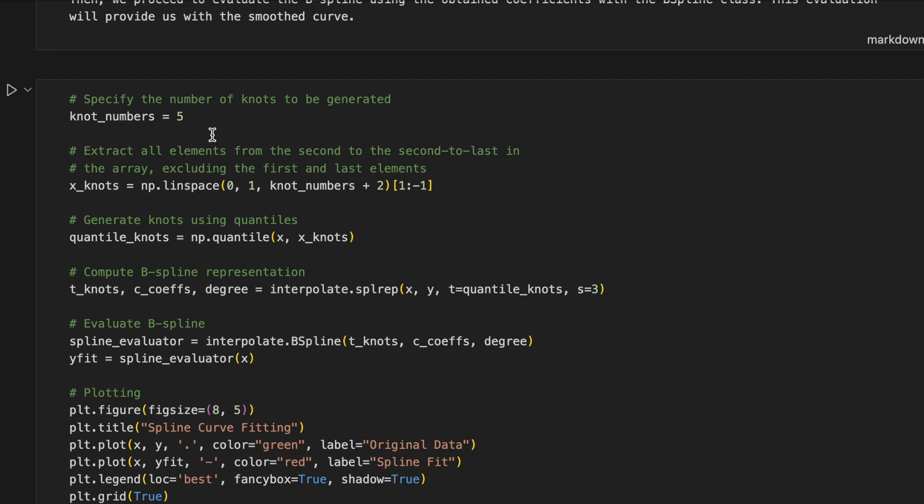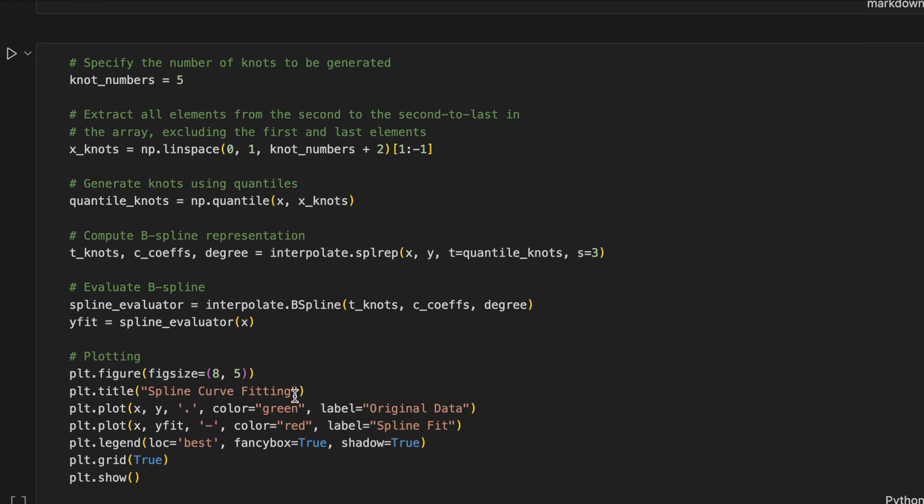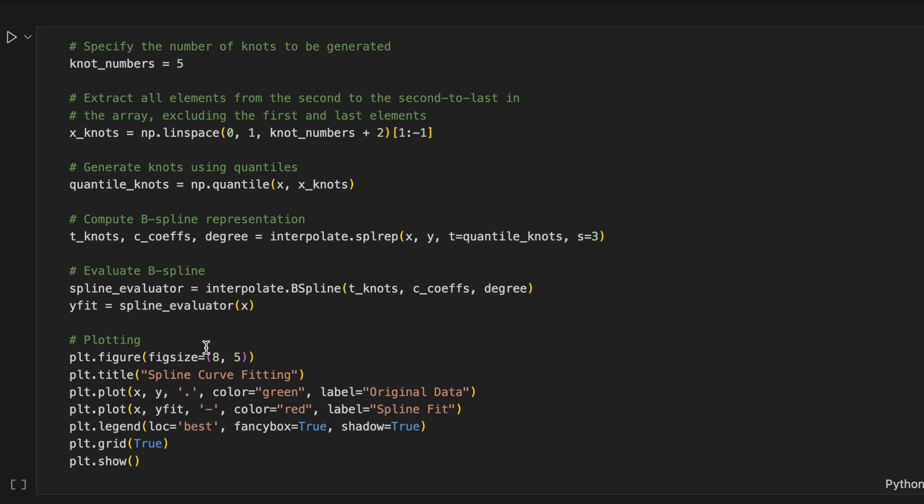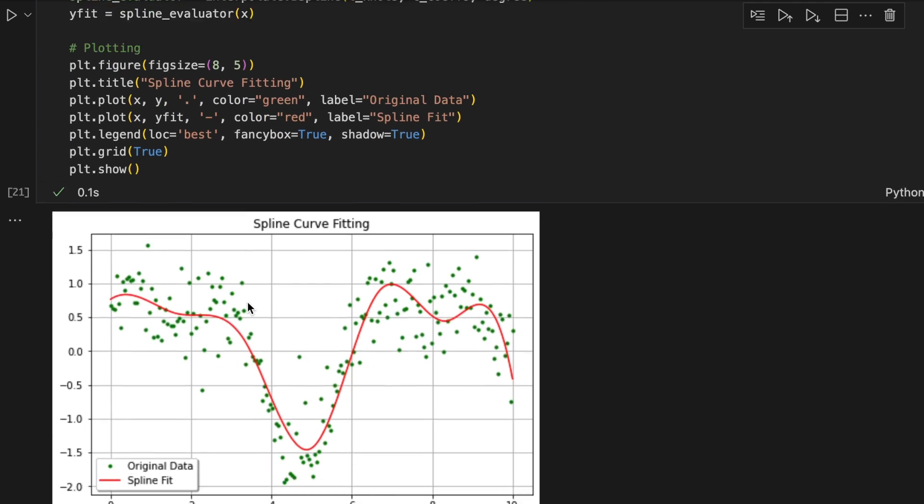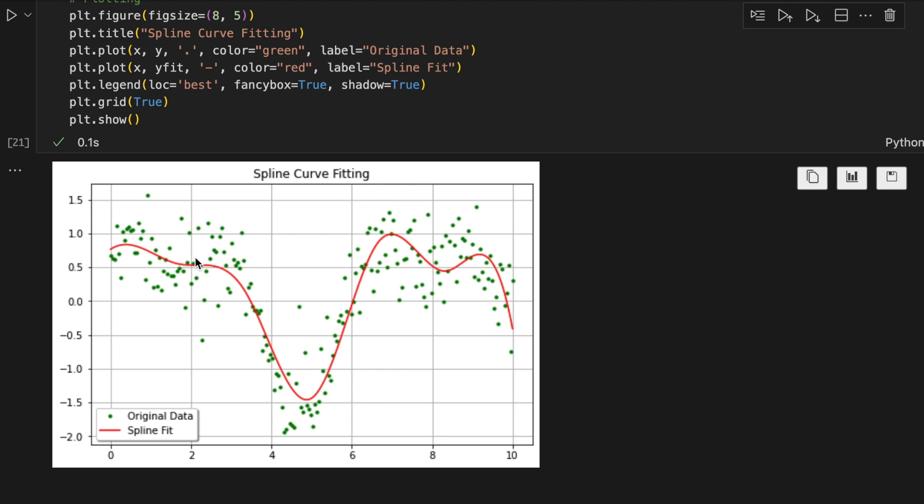Here is the code. First, we specify the number of nodes here. I set 5 here. Then we extract all elements from the second to last in the array, excluding the first and last elements. Then we generate nodes using the quantile function. Then we compute b-spline representation using SPLREP. Here we provide x and y and quantile nodes and the s is a smoothness. Then we evaluate b-spline by using b-spline class. Here we need to provide those coefficients. Then we fit x data and we'll get the fitted curve. And we can visualize them in a plot. Here is the result. We got the fitted curve by using spline method here.